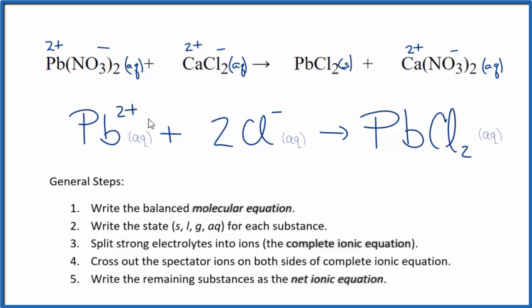You'll note that charge is conserved. We have 2 plus here, 2 times 1 minus, that's 2 minus. So the total net charge here is 0. Same on this side, neutral compound, net charge is 0. If you count the atoms up, they're balanced as well.